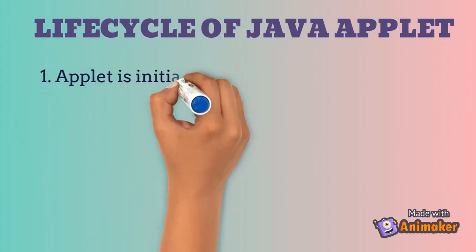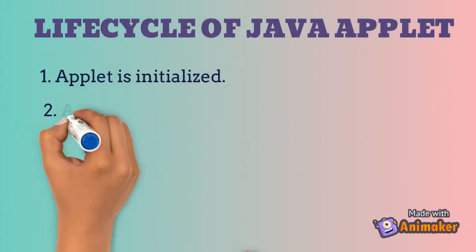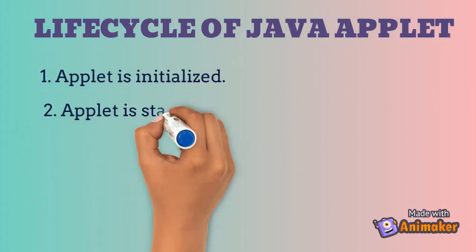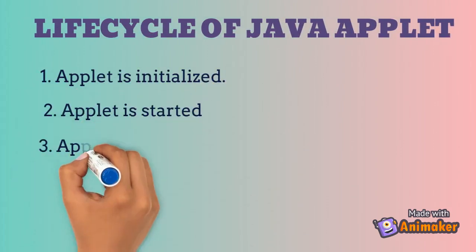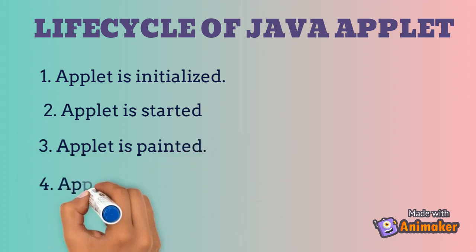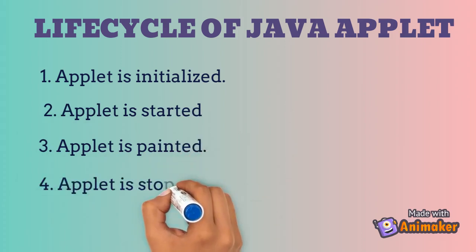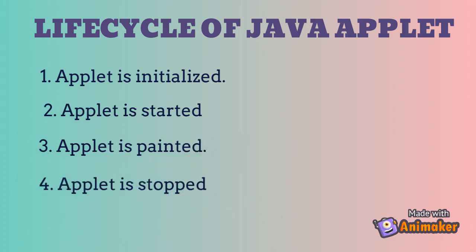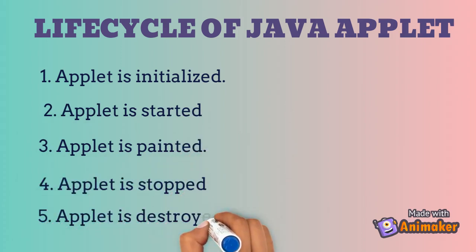There are five methods of Applet lifecycle. First one is Applet is initialized. The second one is Applet is started. Third one is Applet is painted. Fourth one is Applet is stopped. And fifth one is Applet is destroyed.